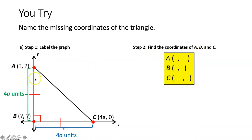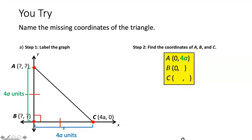Point A is on the Y axis, so its X coordinate is zero. It goes up 4A units, so point A is at zero comma 4A. Point B is at the origin, so its coordinates are zero comma zero. Point C we already know the coordinates for, so we're done.